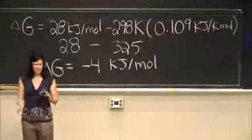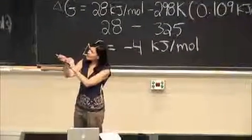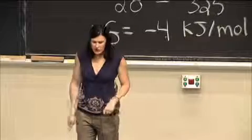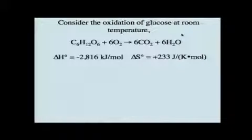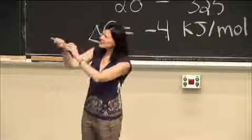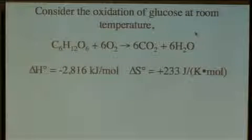Let's take a look at one more reaction, since we've spent so much time discussing the oxidation of glucose. What we know about this reaction, we've already calculated the delta H is negative 2816 kilojoules per mole, and you could look up, and we'll figure out how to calculate it soon, the change in entropy, which is plus 233 joules per kelvin mole.